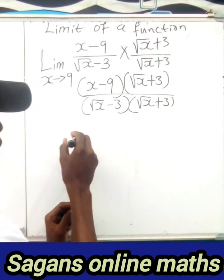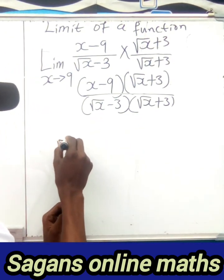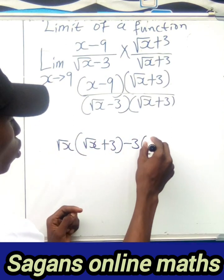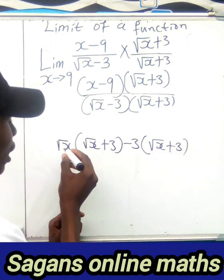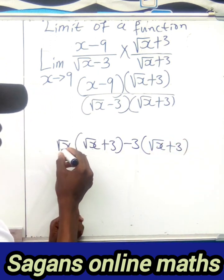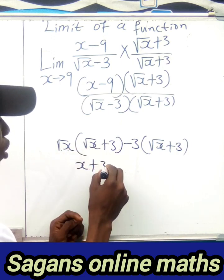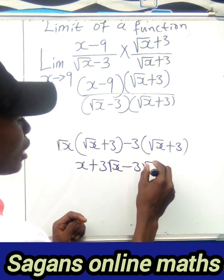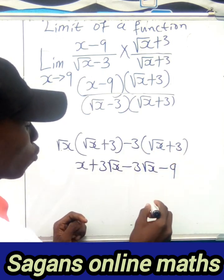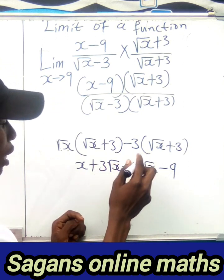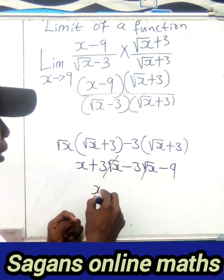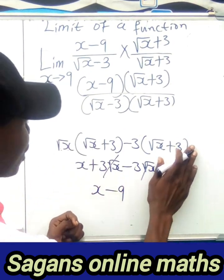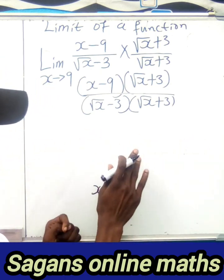Now I'll expand the numerator. We get (√x times √x) plus (3√x) minus (3√x) minus 9. That is: x plus 3√x minus 3√x minus 9. The 3√x terms cancel, so we're left with x minus 9 in the numerator. The denominator is also x minus 9.